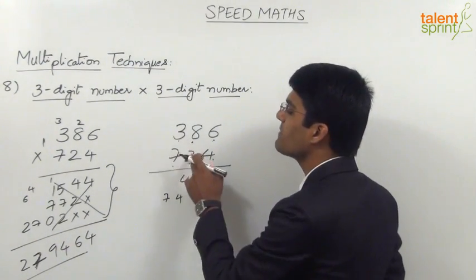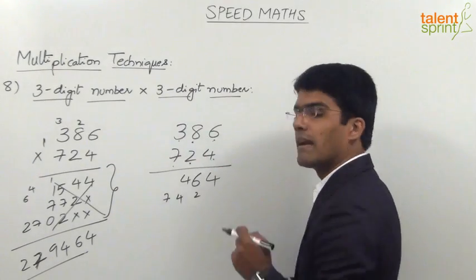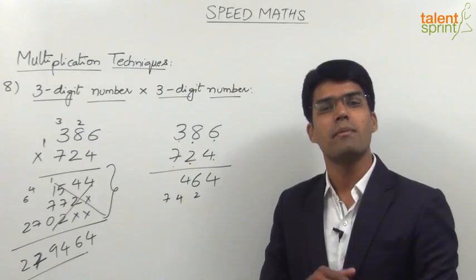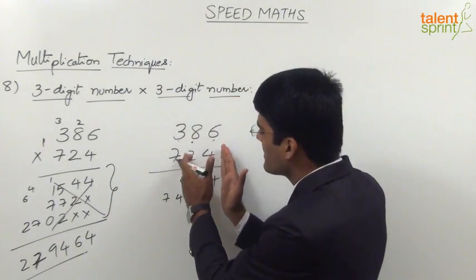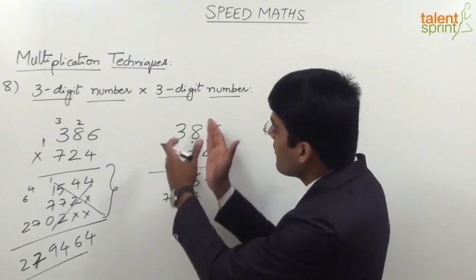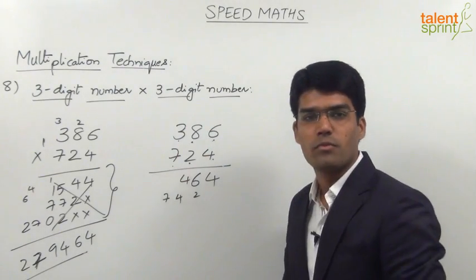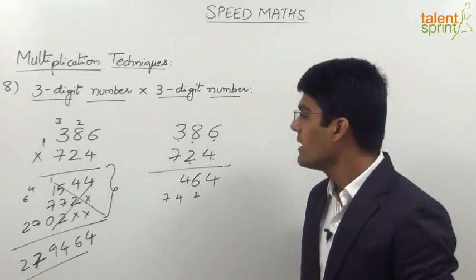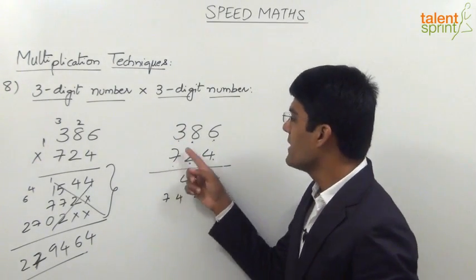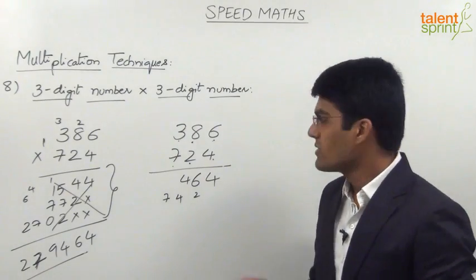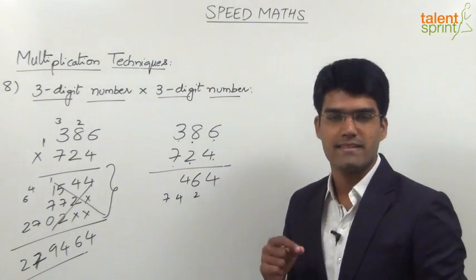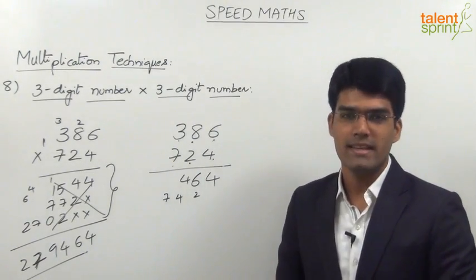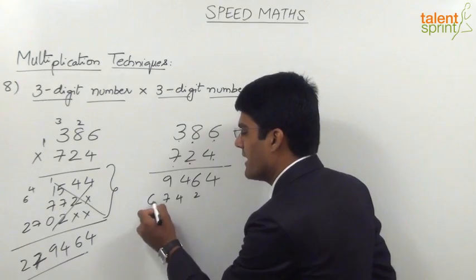In the fourth step we cross multiply the tens places with hundreds places — similar to step two, but now for these two columns. 3 into 2 is 6 and 7 into 8 is 56; 6 plus 56 is 62, and 7 is the carry, so 62 plus 7 is 69. We get 9 in the answer and 6 is carried forward.